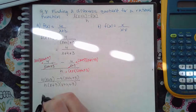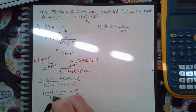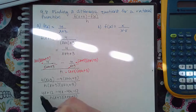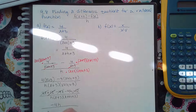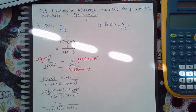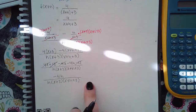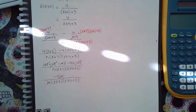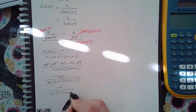I'm going to distribute my four and distribute my negative four, keeping the denominator exactly the same — do not multiply that out. I have four x and negative four x, 12 and negative 12, so I'm left with negative four h over h times x plus three times x plus h plus three. Negative four and h are factors — they're multiplied — so I can reduce them. My final expression is negative four over x plus three times x plus h plus three.